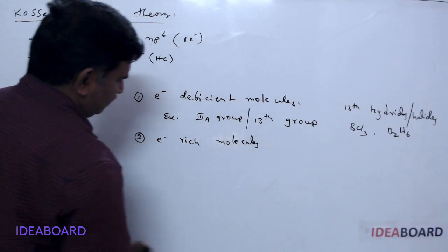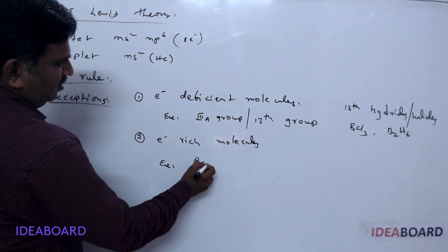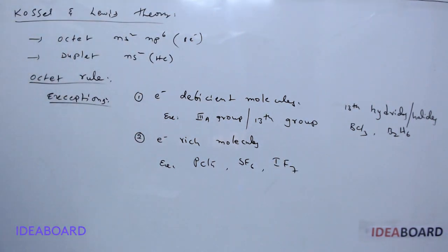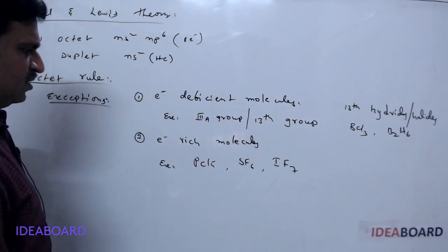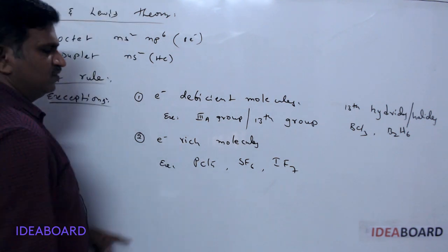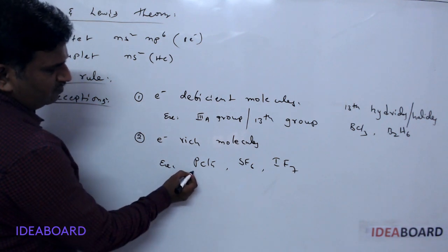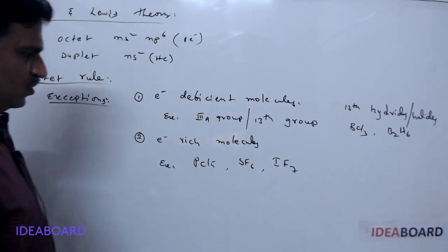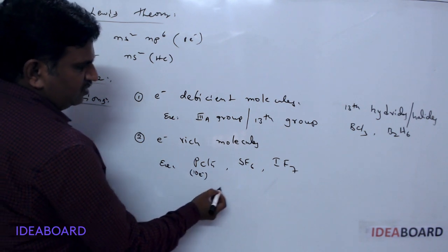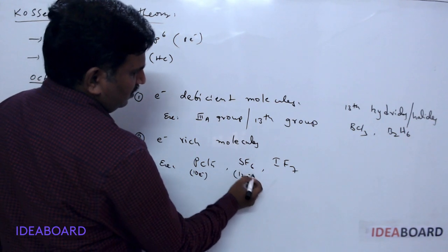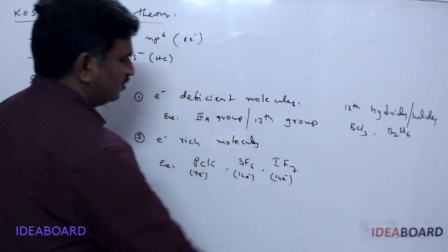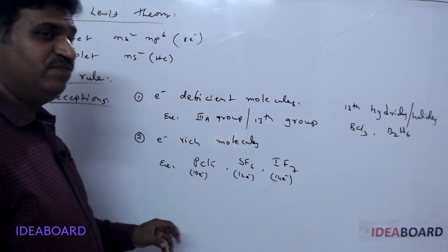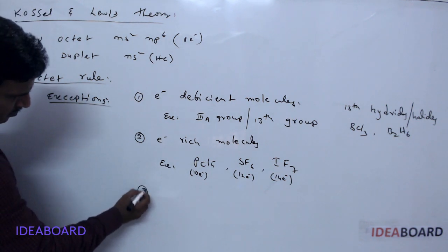The second type is electron-rich molecules. Examples are PCl₅, SF₆, and IF₇. These molecules have more than octet configuration. If PCl₅ is taken, the central phosphorus atom is a fifteenth group element — it gives 5 electrons for bonding, and chlorine gives 5 electrons for bonding, so phosphorus has 10 electrons in total. Sulfur has 12 electrons, and iodine has 14 electrons in total. So they contain more than 8 electrons in their valence shell, and are called electron-rich molecules.